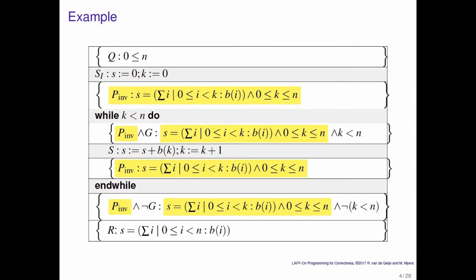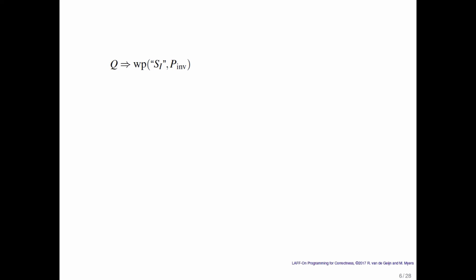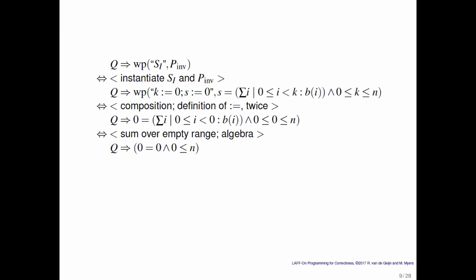So back to our example. What did you prove in a homework exercise? You proved that 0 ≤ n, together with the assignments 0 to s and 0 to k, leaves you in a state where the loop invariant is true. You instantiate the initialization command and the loop invariant, then do textual substitution according to the definition of assignment twice. That leaves you needing to sum over the empty range, which gives 0 = 0 — which is true. After simplification, you end up with the precondition 0 ≤ n having to imply 0 ≤ n, which is obviously true.